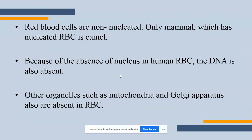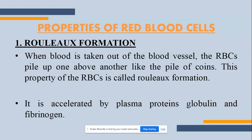RBCs are non-nucleated. The only mammal which has nucleated RBCs is the camel — mammal and camel rhyme, so it is easy to remember. Because of the absence of a nucleus in human RBCs, DNA is also absent. Since there is no nucleus, there are also no mitochondria and no Golgi apparatus in RBCs. Now we will look at the properties of red blood cells.